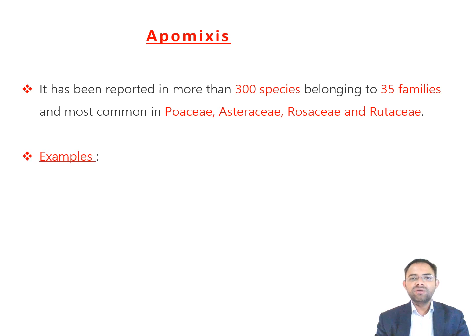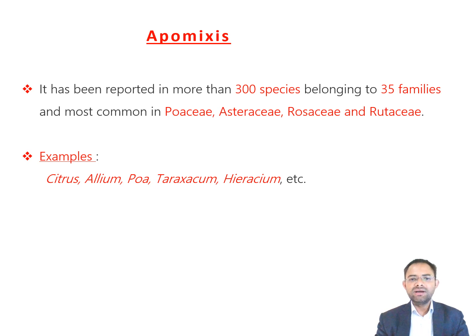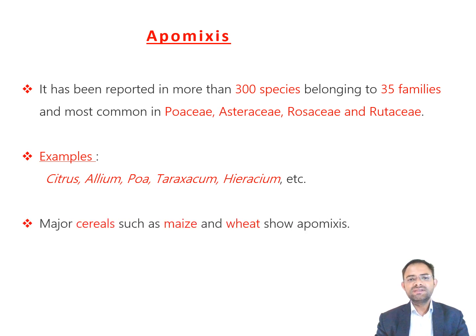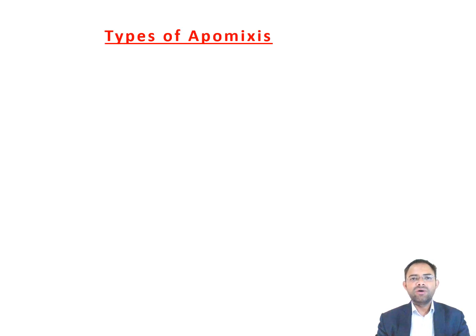Examples of apomixis include citrus, Allium, Poa, Taraxacum, Hieracium, etc. The major cereals such as maize and wheat also show the apomixis phenomenon. Generally, four types of apomixis are recognized: the first is vegetative apomixis, the second is recurrent apomixis, the third is non-recurrent apomixis, and the fourth is adventive embryony.